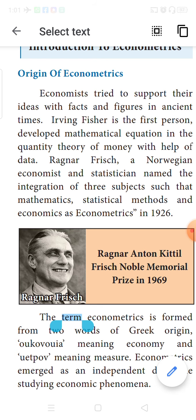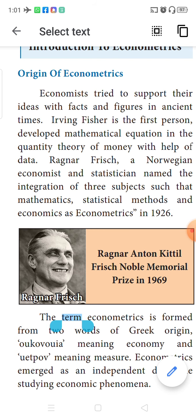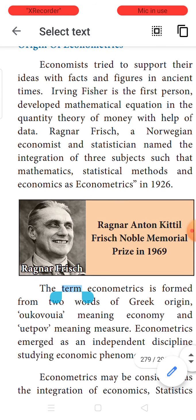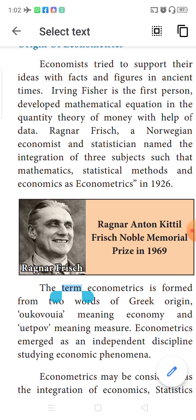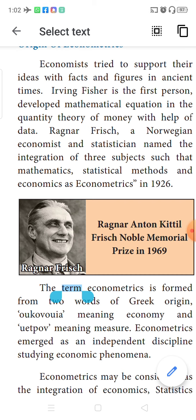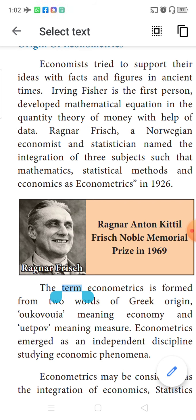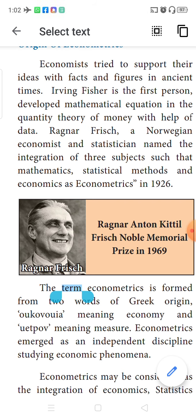He was the first person who brought mathematical equations and data into economics. Ragnar Frisch was a Norwegian economist and also a statistician. He named the amalgamation or integration of three subjects — mathematics, statistics, and economics — and called it econometrics in the year 1926. Please underline this. His full name is Ragnar Anton Kittil Frisch.